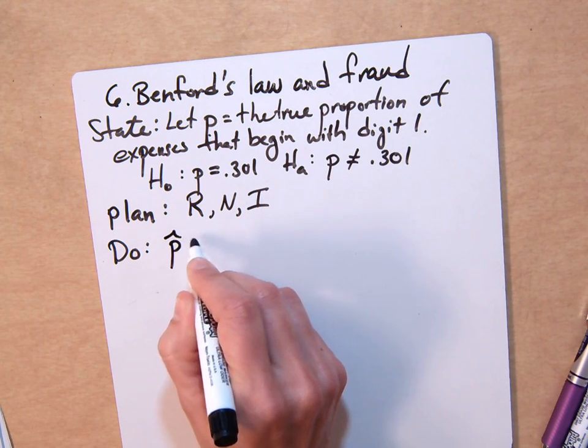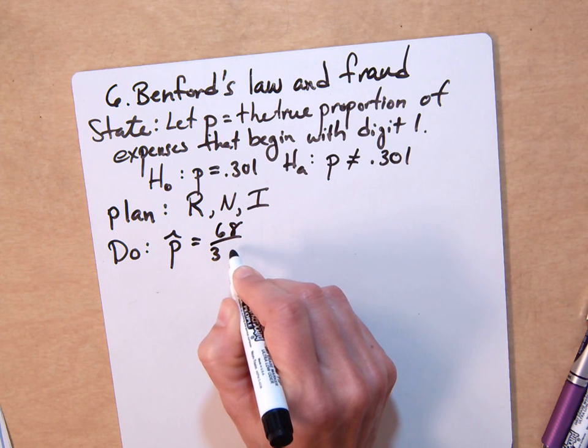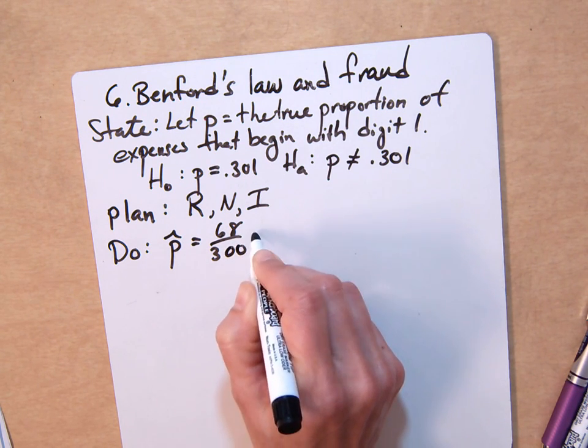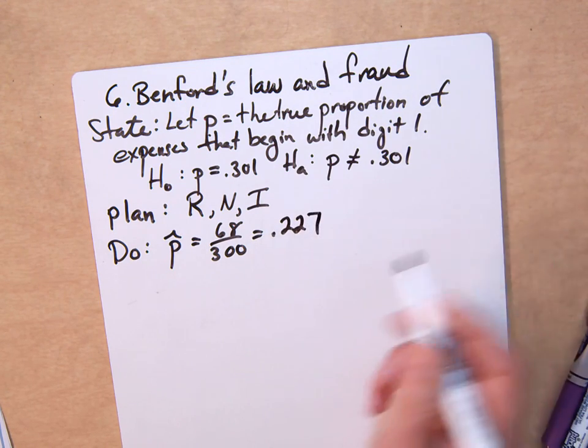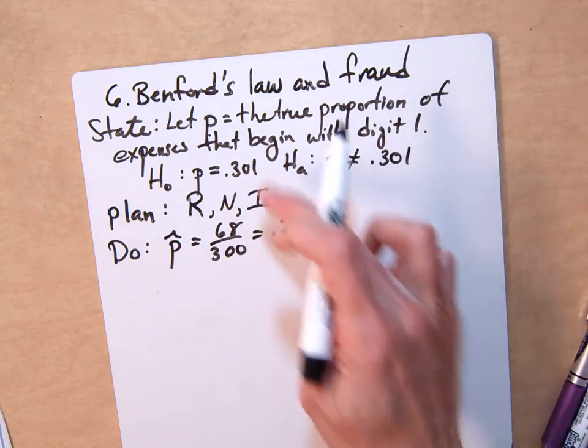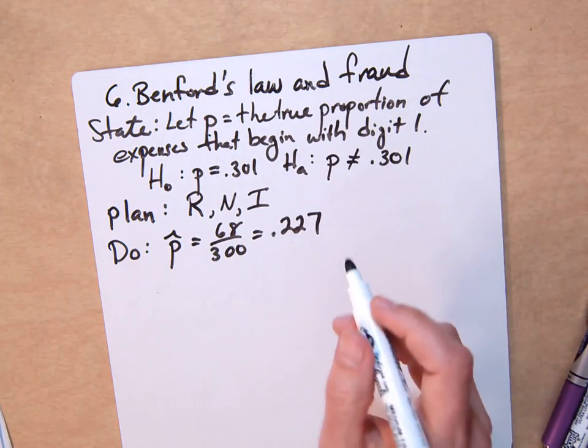The sample proportion is 68 out of 300, which is 0.227. We want to know how far away that is from 0.301, which is stated in the null hypothesis.